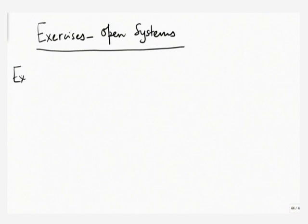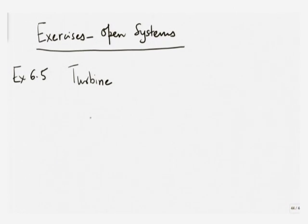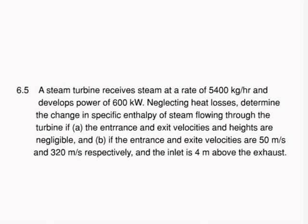Now our exercise session for open thermodynamic systems. Let us begin with problem 6.5. We have a turbine system — sketch a diagram and write as much information as possible on that diagram. The moment you say there is a steam turbine, the student should draw a turbine diagram with an inlet and an exit. The problem states it receives steam at so many kg per hour and develops power of so much kilowatt. Neglecting heat losses, determine the change in specific enthalpy of steam flowing through the turbine if inlet and exit velocities and heights are negligible, and if entrance and exit velocities are 50 m/s and 320 m/s respectively and the inlet is 4 metres above the exhaust.